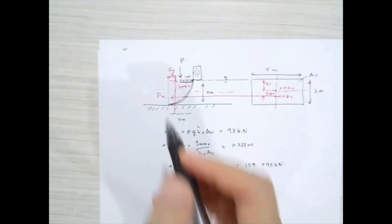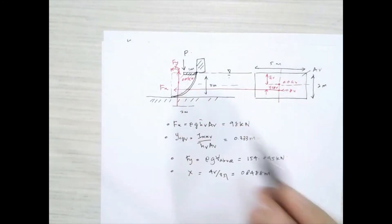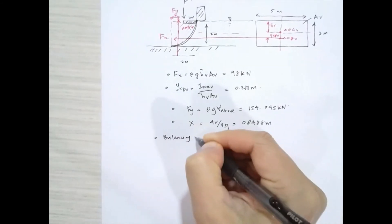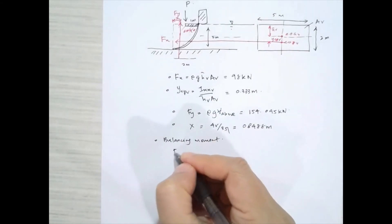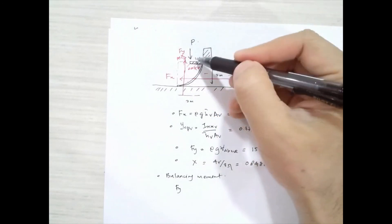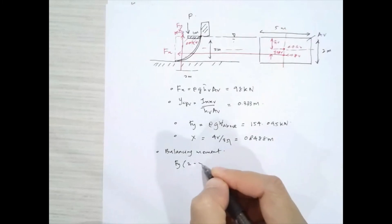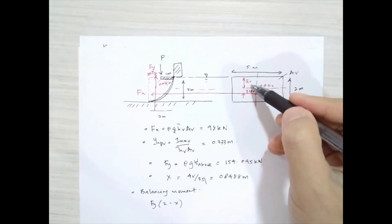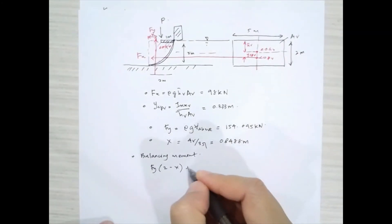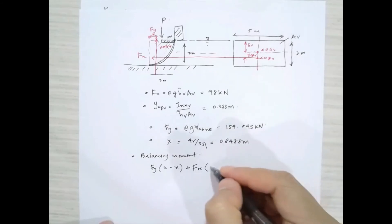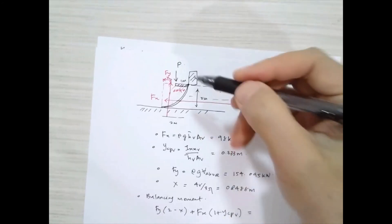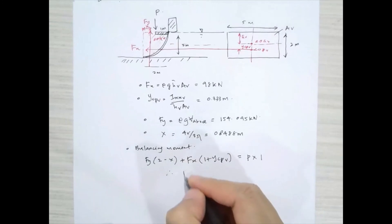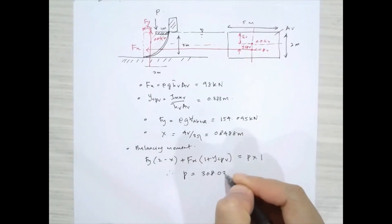To find P, we balance moments again. Fy is now acting upward, so Fy × (2 − x) gives a clockwise moment, and Fx × (H̄_vertical + YCP_vertical) also gives a clockwise moment, balanced by P × 1. The equations are exactly the same as the previous case, so P = 308.03 kN.